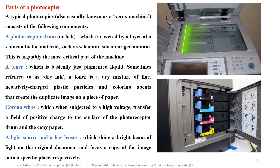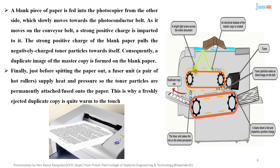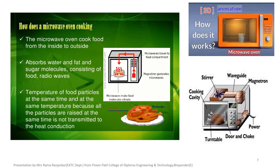This diagram shows the picture of the photocopied image with the partage. Now, how does the microwave oven work? This is our second application. The microwave oven cooks food from the inside to outside. It absorbs the water and sugar molecules consisting of food radiators, and the temperature is raised at the same time because all the particles are raised simultaneously, not transmitted through heat conduction.